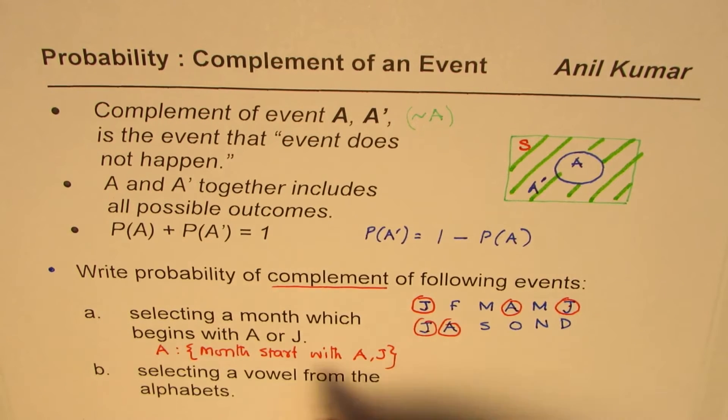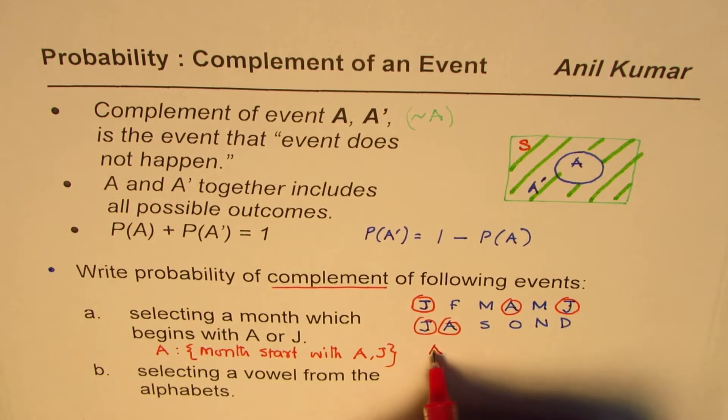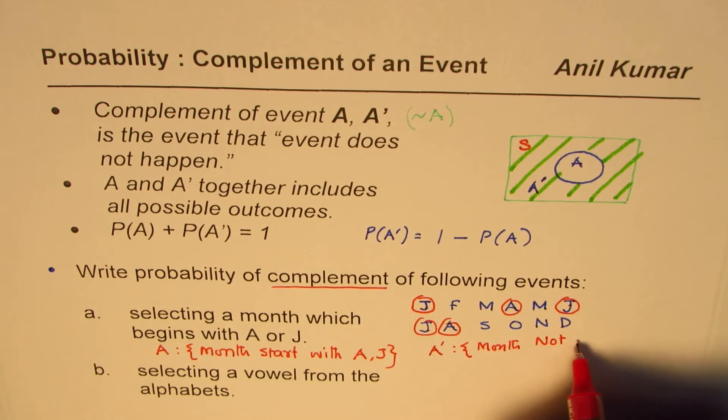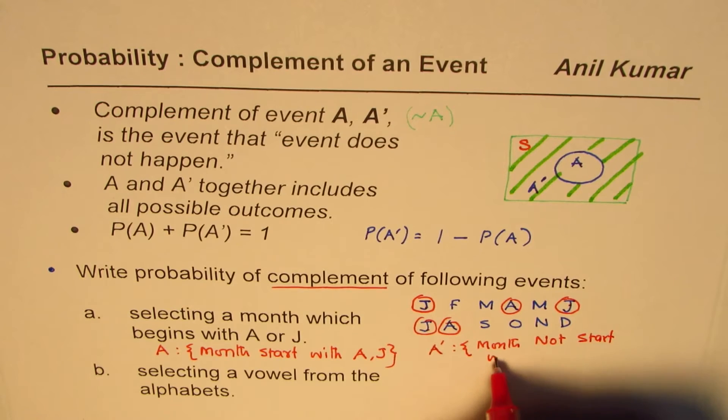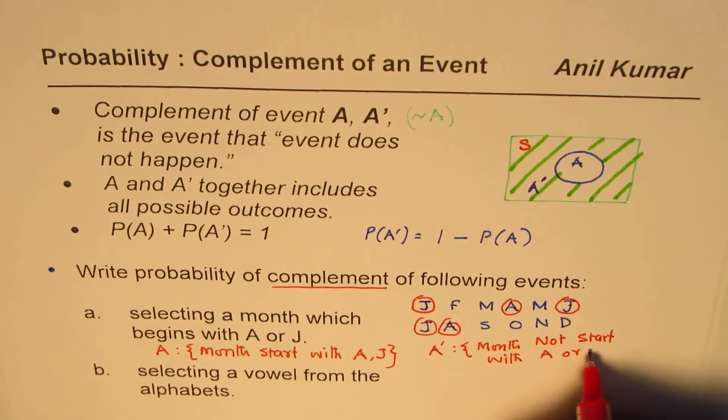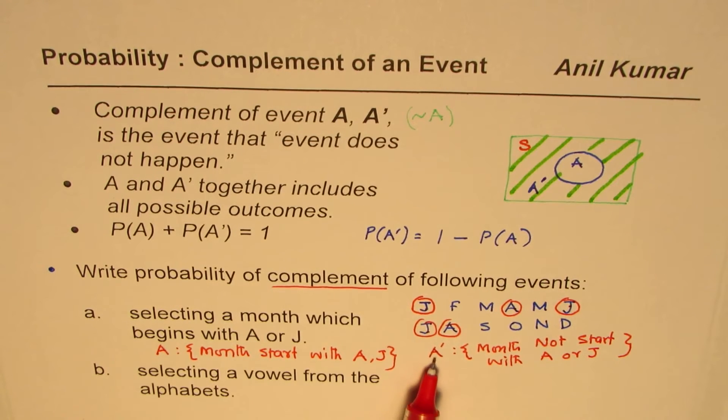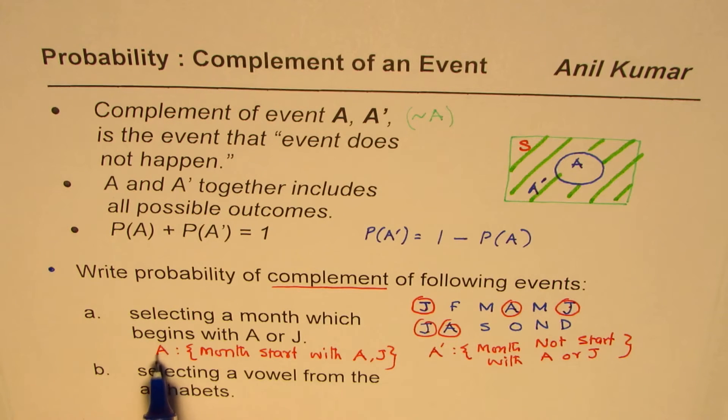Then what is complement of A? Complement is months not starting from, not start with letter A or J. So that is what is complement. So we need to find probability of this. So there are two ways to go about: you can find probability of A and then do one minus that, or you could find probability of A prime directly.